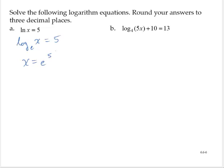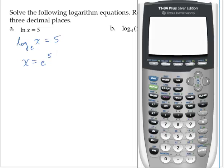It asks us to round our answers to three decimal places. So now using the calculator, I would have e to the fifth power. Remember to bring up that e raised to the power, you hit the second function and the natural log button. So e raised to the fifth power is 148.41.